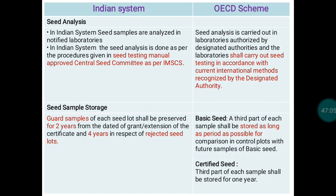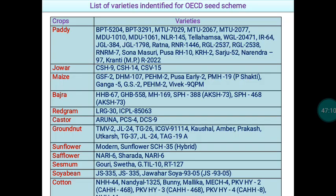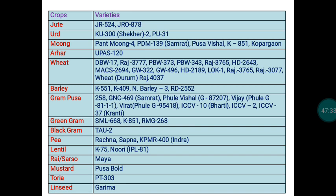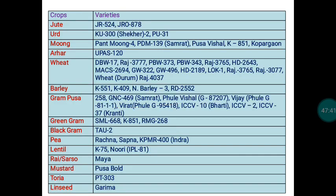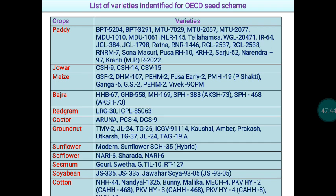For OECD Basic Seeds specifically, the third sample must be stored for at least one year. The listed varieties from India in the OECD seed scheme include PP2, various groundnut varieties such as TMV2, and vegetable varieties such as PKM1 tomato, among many others already listed in OECD schemes.